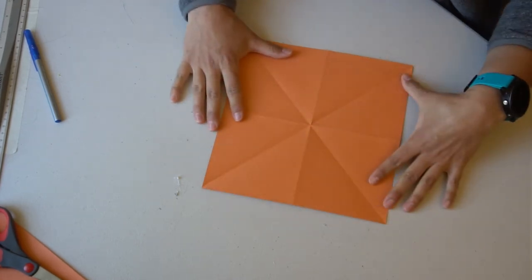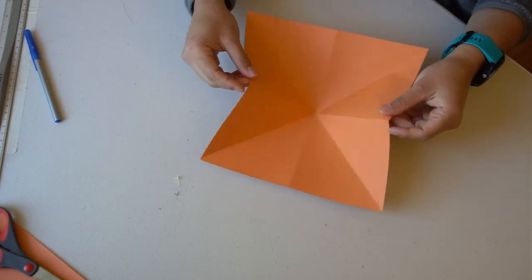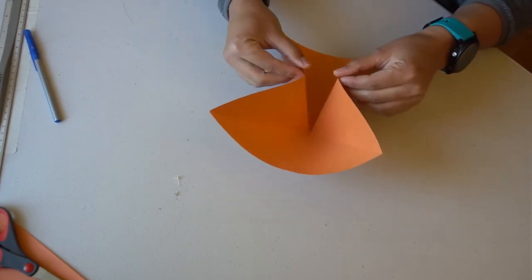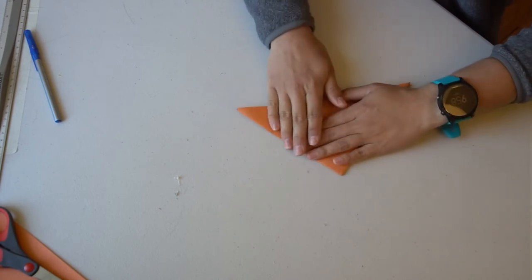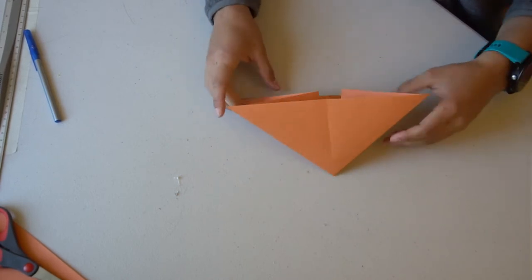The next step is to take the center of both sides in your hands and pull them together so that they touch, then flatten the whole thing so you have a triangle. Watch again if you need to.